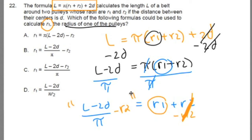You don't necessarily need to know what that thing is. All you need to know is that this is the expression that represents r1. Now which one of these matches up to this? Well, if you look closely, it should be B. Look at B. r1 equals the length minus 2d divided by pi and then subtract r2. We've just solved for r1.